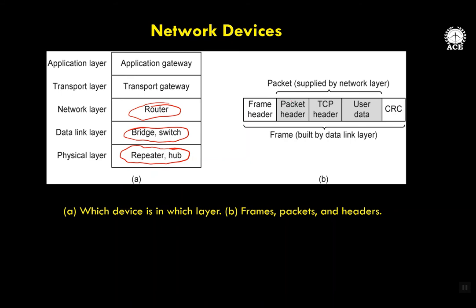This is the general frame format which we have seen several times. A frame is an encapsulation of a packet; the packet comes from the network layer. This packet includes a TCP header because it descends from the transport layer. So we add TCP header, then IP header, packet header, and frame header. These form a complete frame with CRC, which comes at the data link layer.